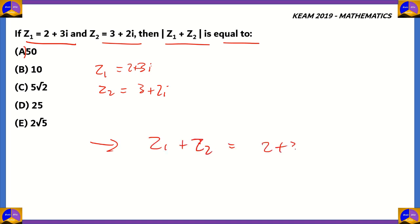That is 2 plus 3i plus 3 plus 2i. 2 plus 3 equals 5. 3i plus 2i equals 5i. So, z1 plus z2 is a complex number that is equal to 5 plus 5i.